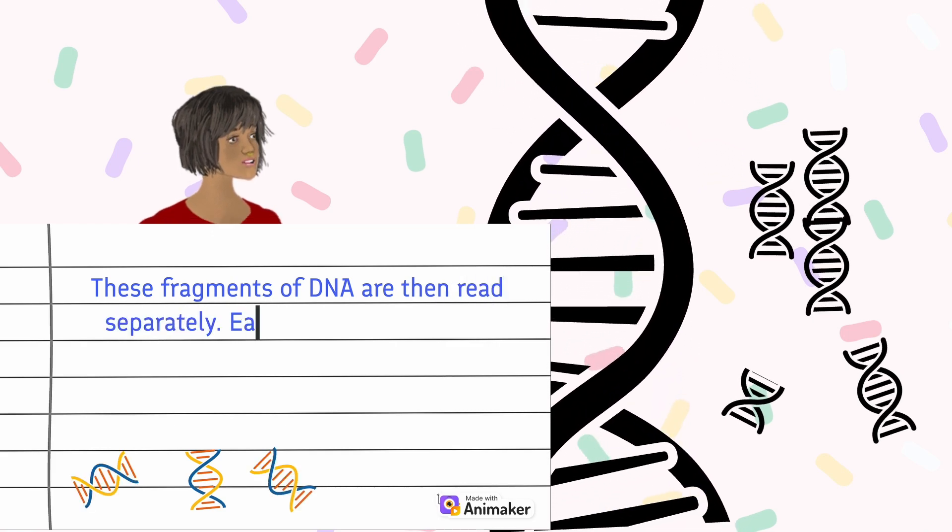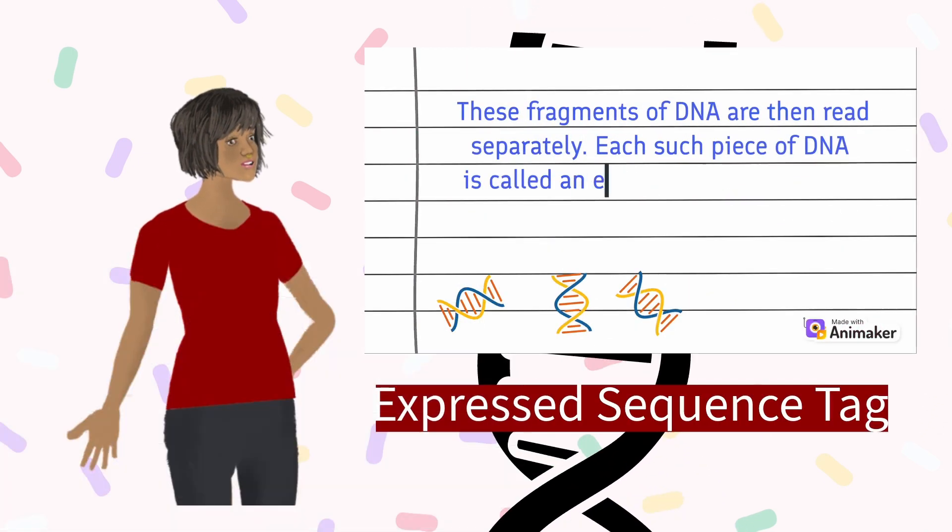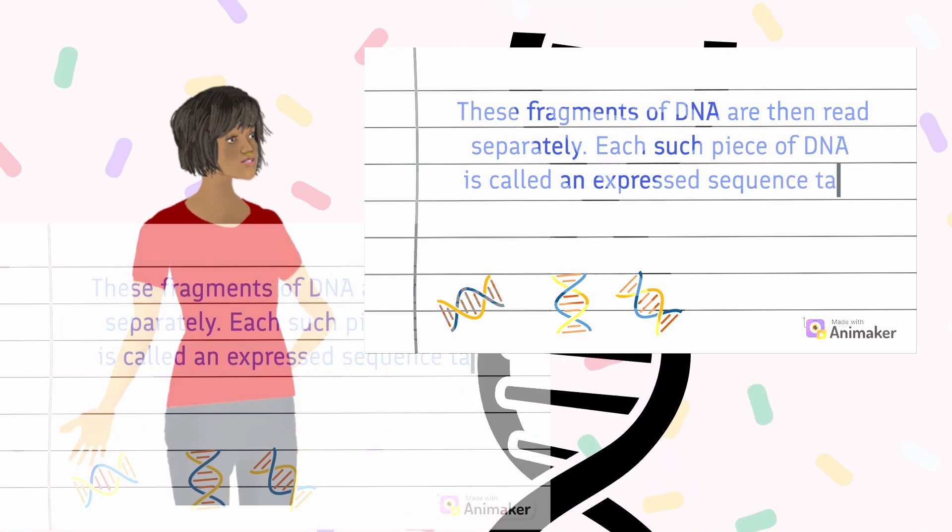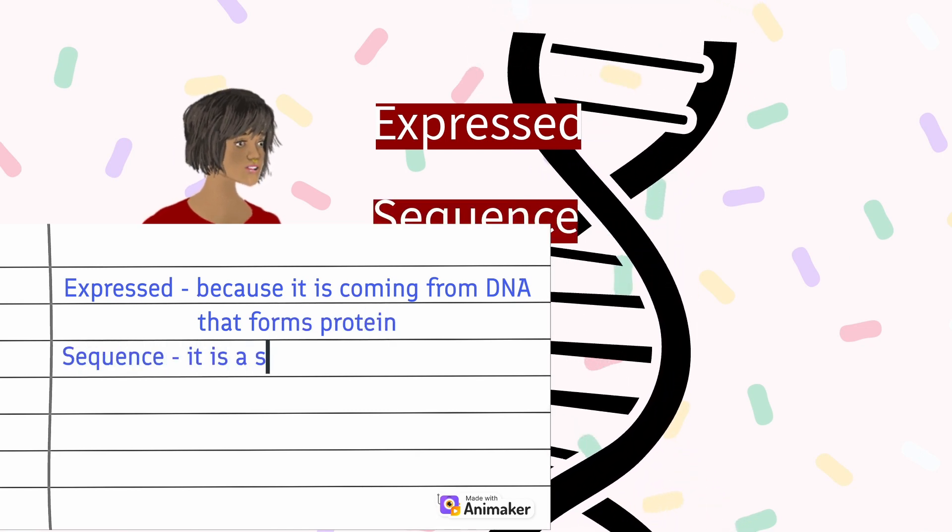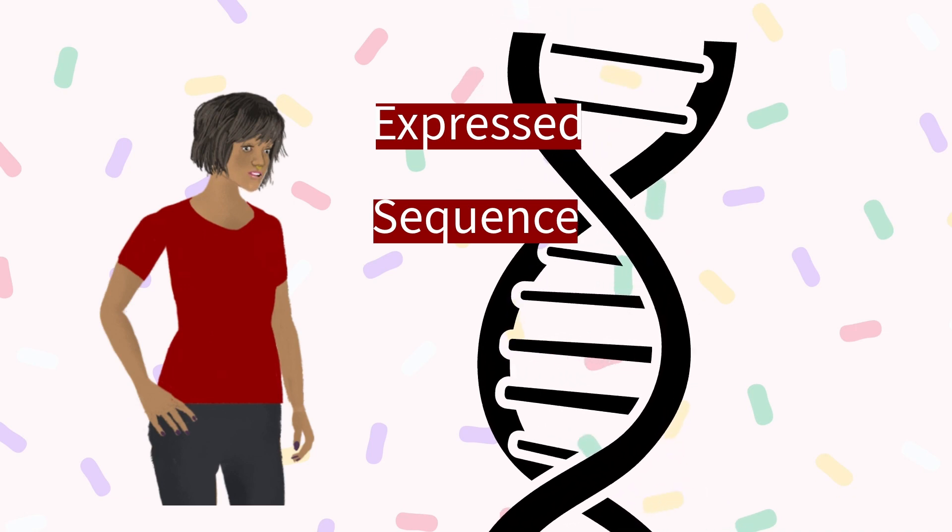Each such piece of DNA is called an expressed sequence tag. Expressed because it is coming from DNA that forms RNA and then protein. Sequence because it is a sequence of four letters that make up DNA.